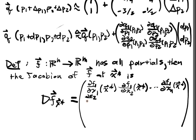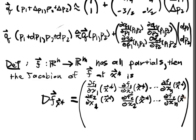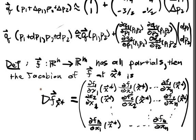DF2 DX1 of x star, all the way up to DF2 DXn of x star, and this continues on until we get to the final function coordinate, DFm DX1 of x star, all the way up to DFm over DXn of x star.